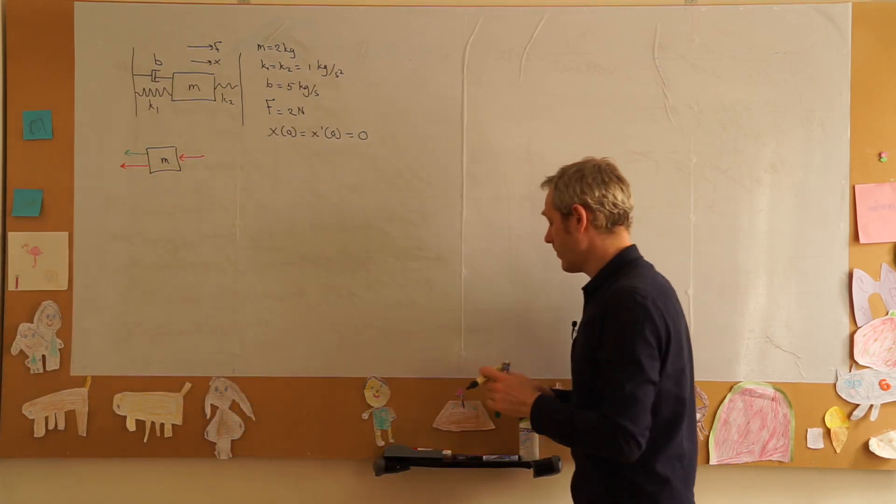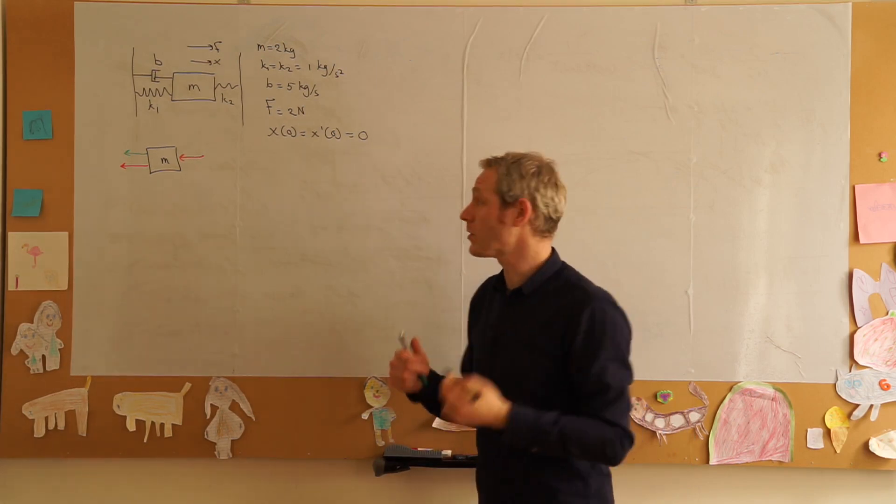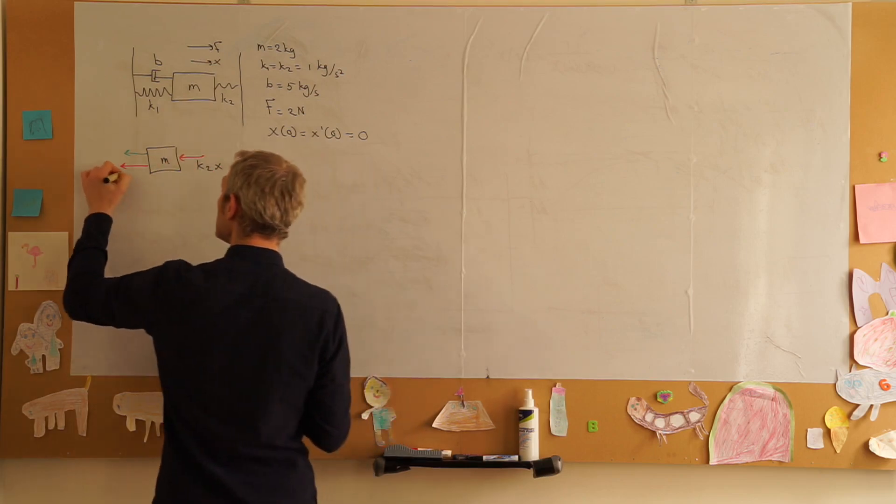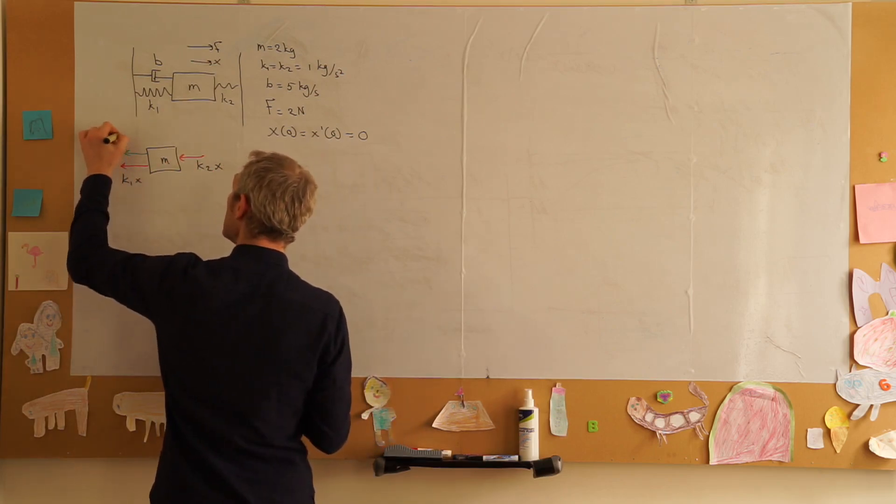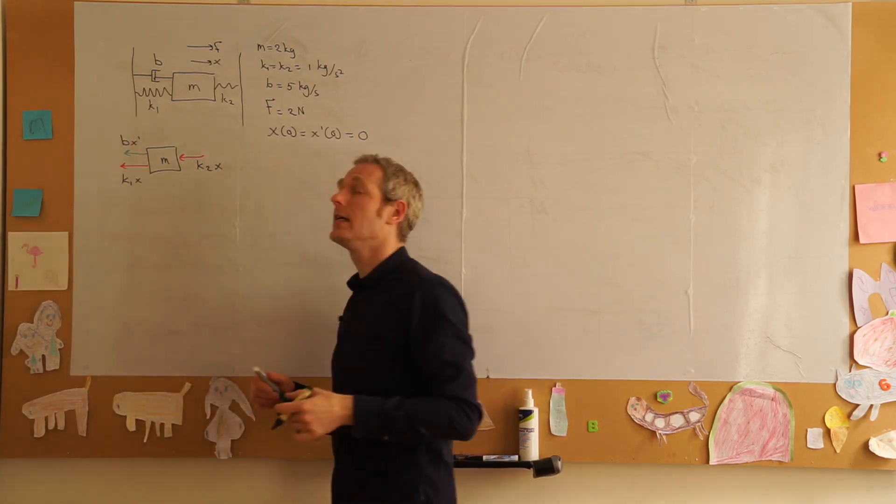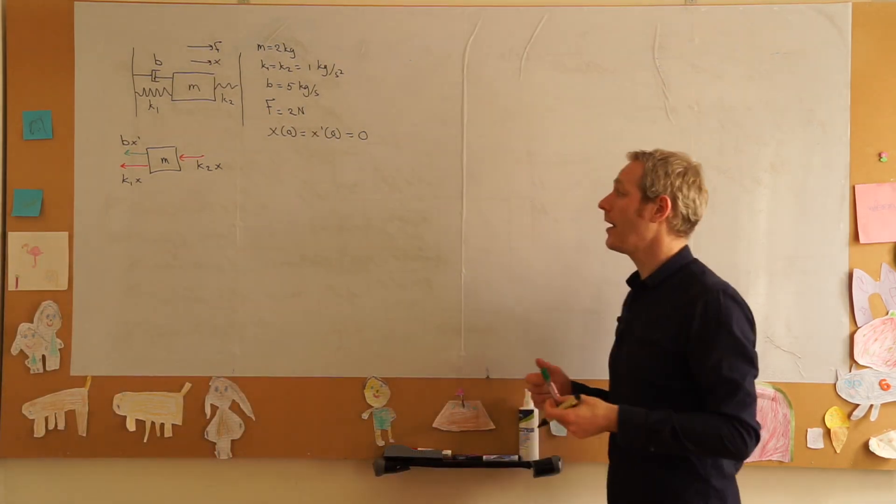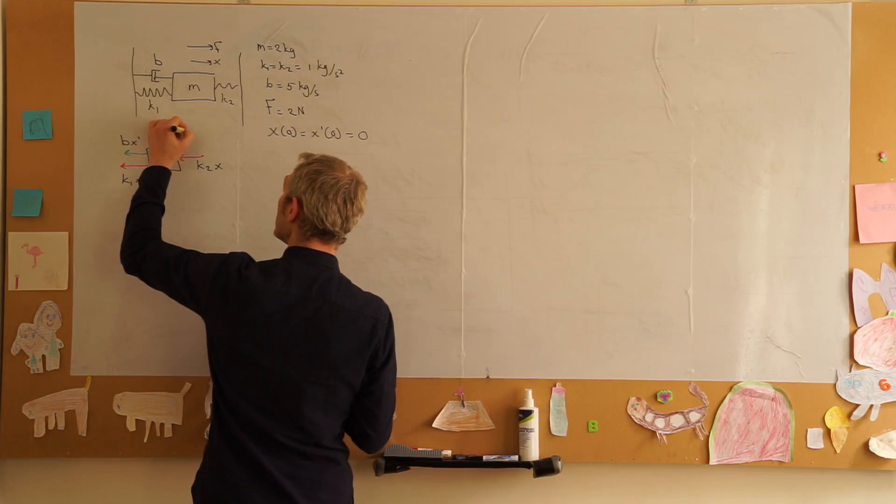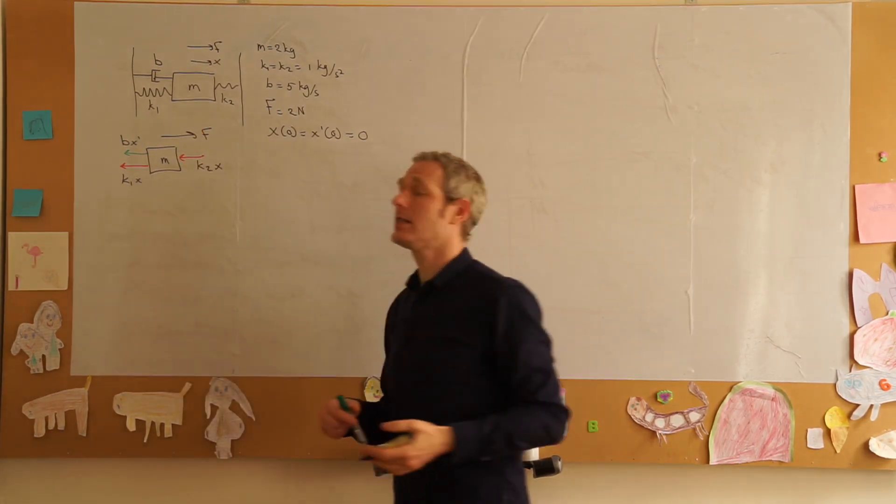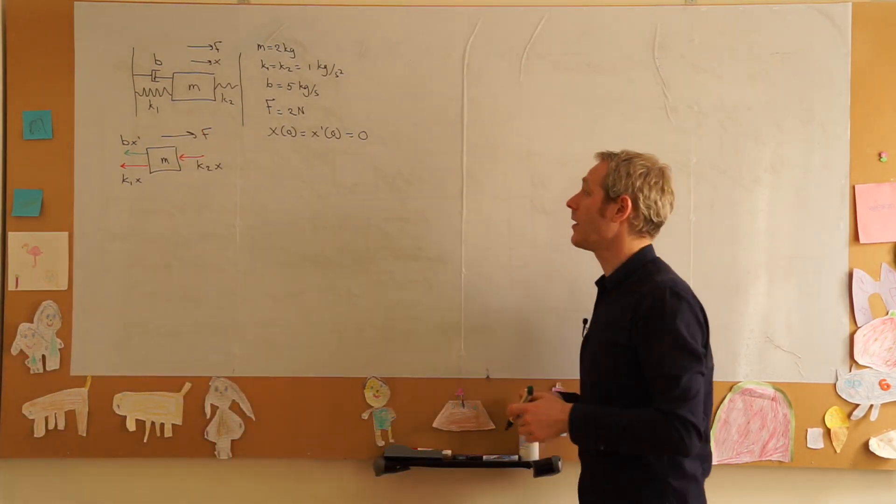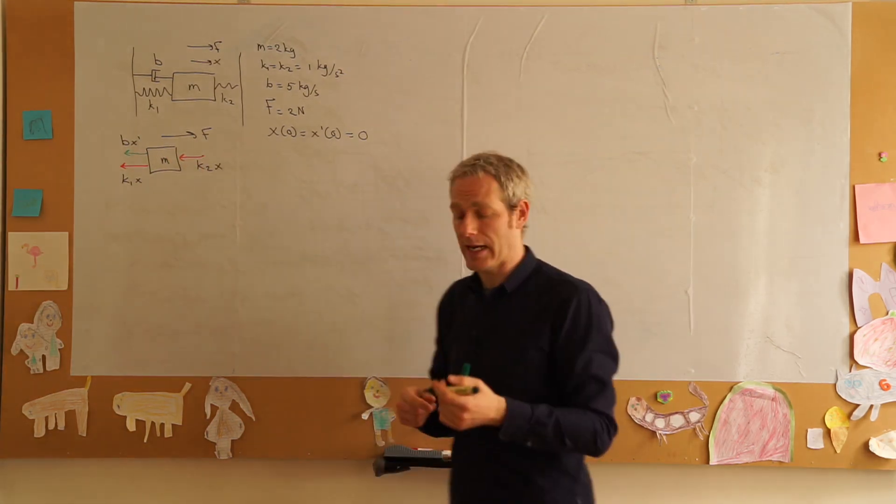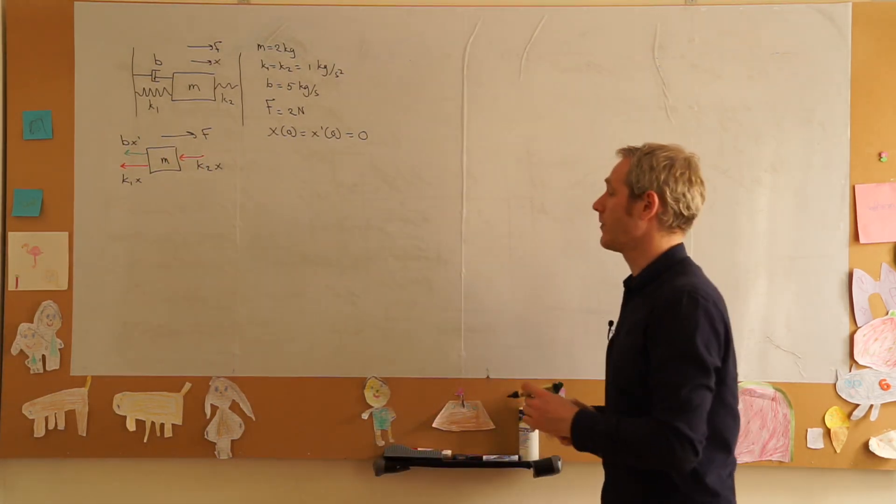Now the force of the springs is proportional to the displacement so this is equal to k2 times x, this one is k1 times x and this one is b times the velocity because it is damping. We also have a force F that way and this concludes our free body diagram.